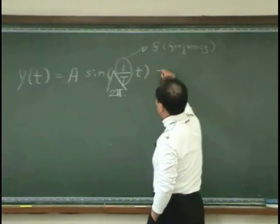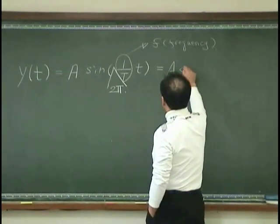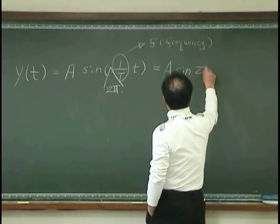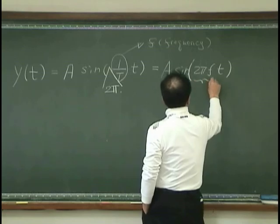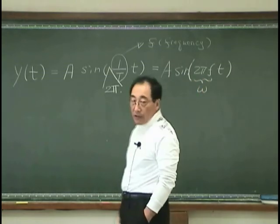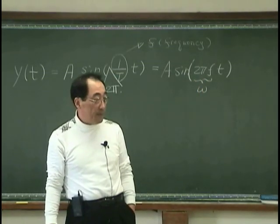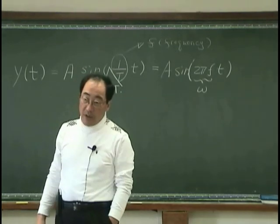So, now I can write this. This is A sine 2 pi f t. And we know that often we write this omega. That is radiant frequency.